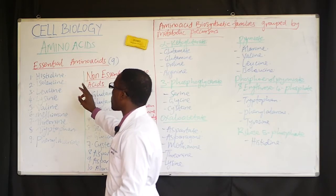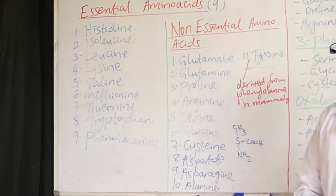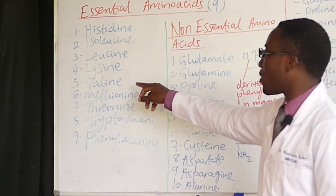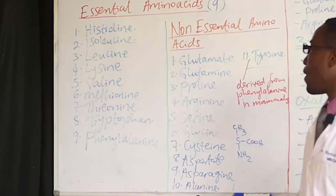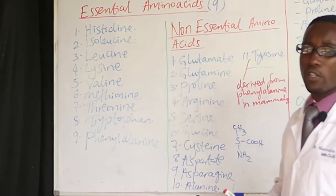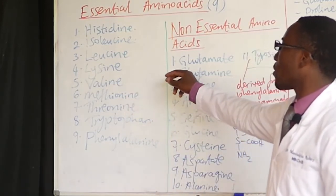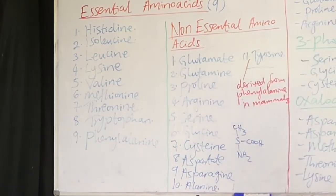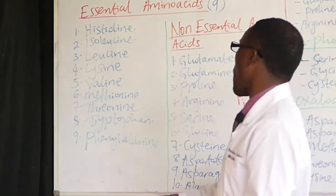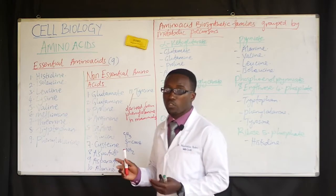The essential amino acids are: histidine, isoleucine, leucine, lysine, valine — which is relevant to the pathogenesis of sickle-cell disease, where valine undergoes substitution replacing glutamate at position 6 in the beta-globin chain, resulting in defective hemoglobin that undergoes polymerization when oxygen tension reduces — methionine, threonine, tryptophan, and phenylalanine. These nine are our essential amino acids.